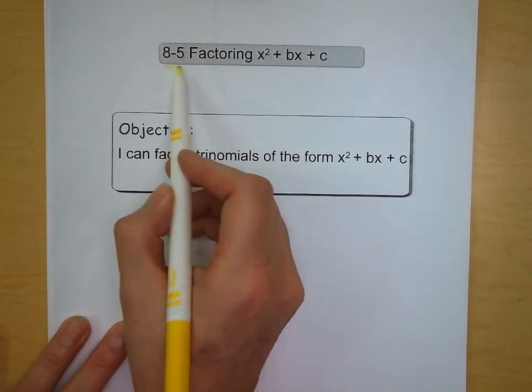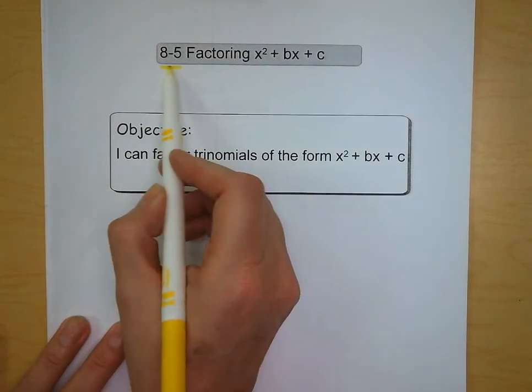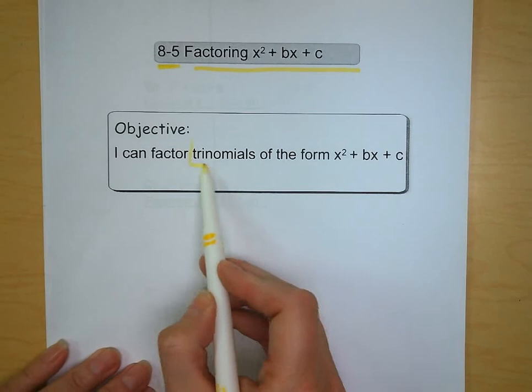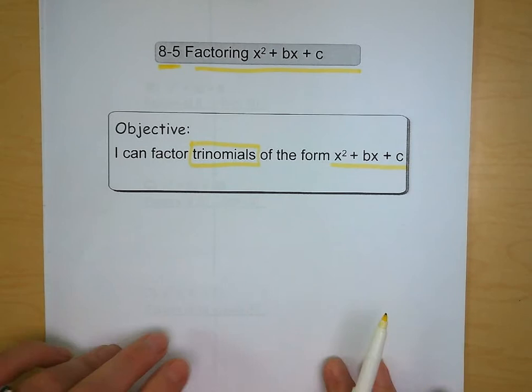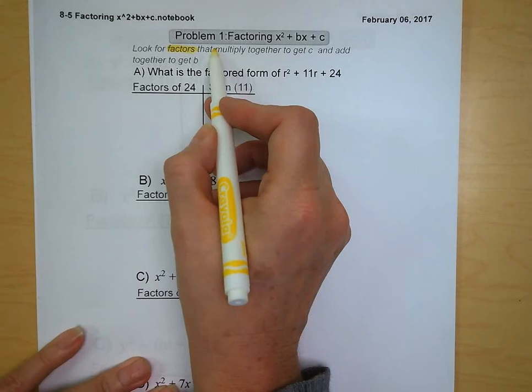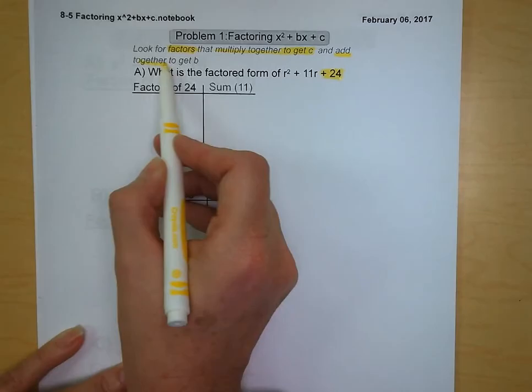Hi guys, today we're going to be working on 8.5, factoring an equation that is in the form x squared plus bx plus c. Our objective for today is going to be the factoring of trinomials in that form. When it comes to factoring expressions like this, we are going to look for factors that multiply together to give us our c value, and that add together to give us our b value.